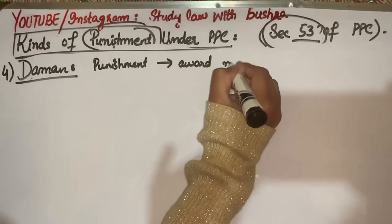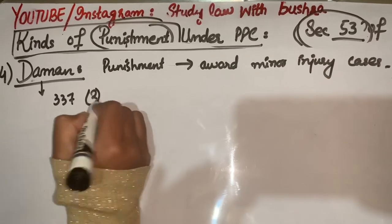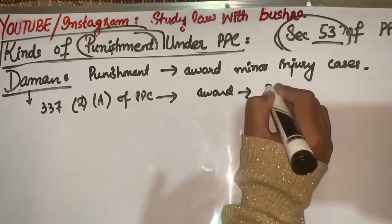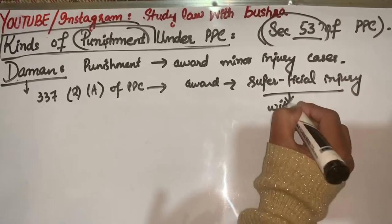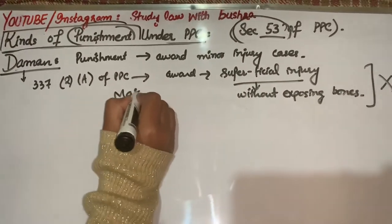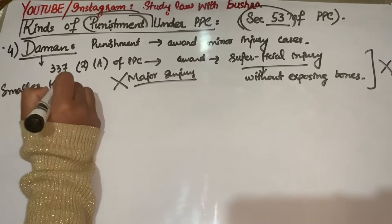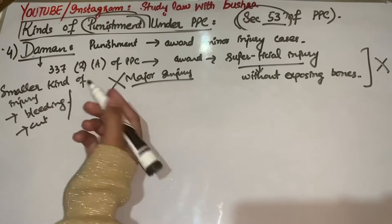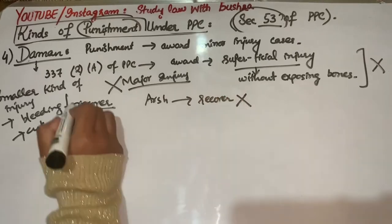Next kind of punishment is Daman. Daman is a type of punishment which is awarded in minor injury cases. Section 337 part 2A hamare paas batata hai ki Daman woh punishment hai jo superficial injury cases mein award ki jati hai, that means without exposing bones. Jahan major injury nahin hai, koi bhi bande ko zyada nukzaan nahin ho raha, balke smaller kind of injury hai, like for example muscles ko cut lag jana, koi bleeding ho jana, jo ke hum jaldi recover kar sakte hain.